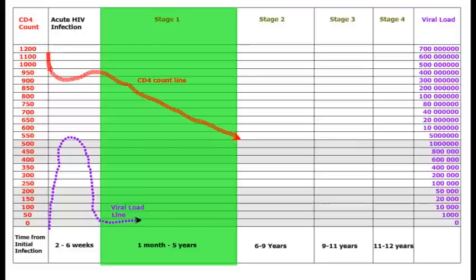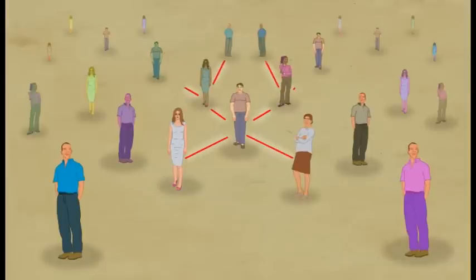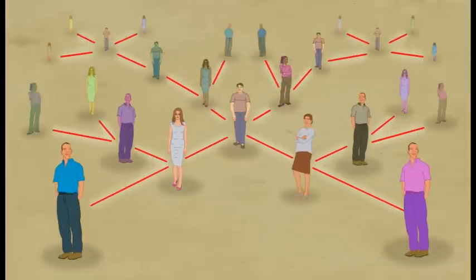At the same time, the HIV levels in the blood slowly rise. Although generally symptom-free, a person in this stage can still pass the virus on to others.